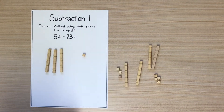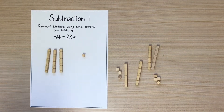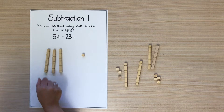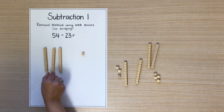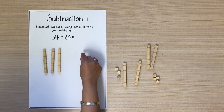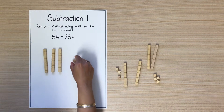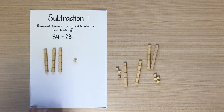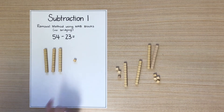Now let's see how many MAV blocks we have left. 10, 20, 30, 31. Therefore your answer is 31.